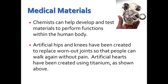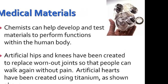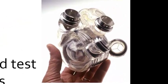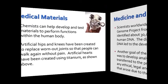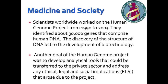Chemists can also develop and test materials to perform functions within the human body. Artificial hips and knees have been created to replace worn-out joints so that people can walk again without pain, and artificial hearts have been created — this specific one made using titanium. Scientists worldwide worked on the Human Genome Project from 1990 to 2003, identifying about 30,000 genes that comprise human DNA, which led to the development of biotechnology.